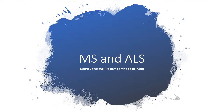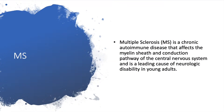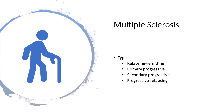Our sources are Iggy's Medical Surgical Nursing 9th Edition and Sol's Introduction to Critical Care Nursing 7th Edition. Multiple sclerosis, or MS, is a chronic autoimmune disease that affects the myelin sheath and conduction pathways of the central nervous system, and is the leading cause of neurologic disability in young adults.